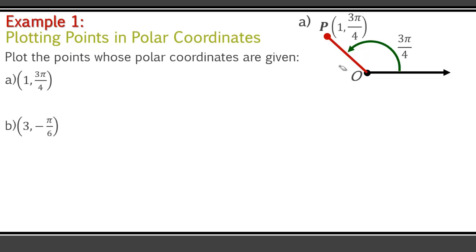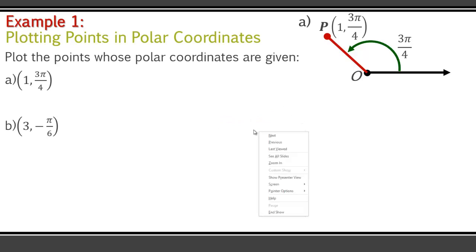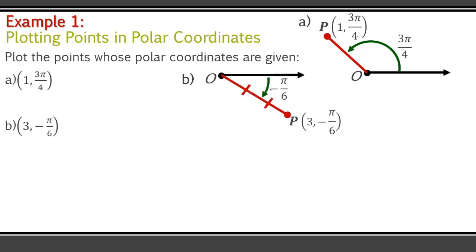(3, -π/6) — what do you think that would look like? We're going to apply some of the concepts we've learned before. We would have our polar axis, and then negative is going to take us clockwise — negative π/6 takes us this way. The finished product looks like that. So the negative tells us to go clockwise from the polar axis. And notice these lines — this is just 3 units: 1, 2, 3. That's the distance from O to P.